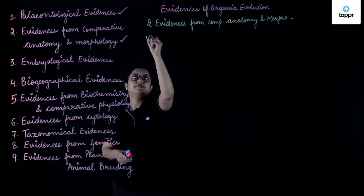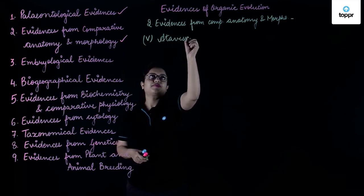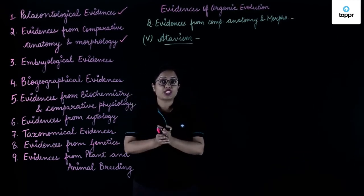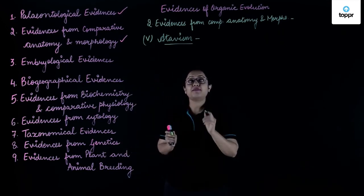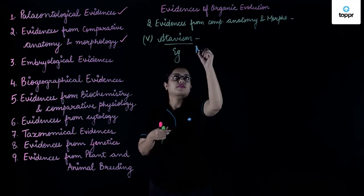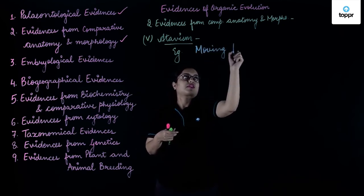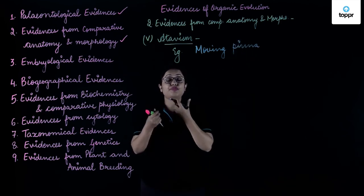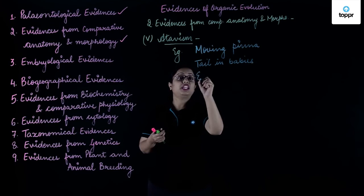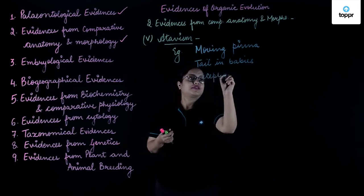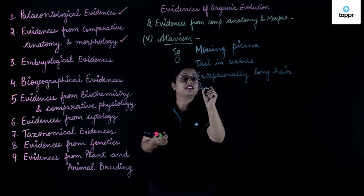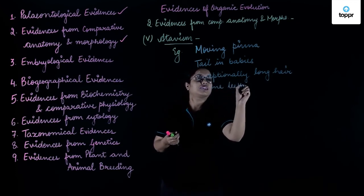The next topic is atavism. Atavism means the reoccurrence of various functions which were reduced or non-functional in our ancestors. For example, moving pinna in humans, occurrence of tail in some babies, exceptionally long hair, and canine teeth.